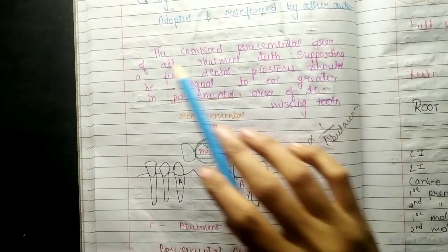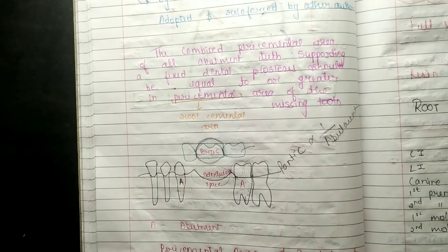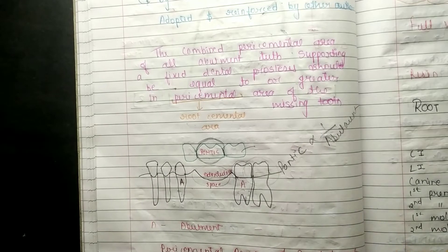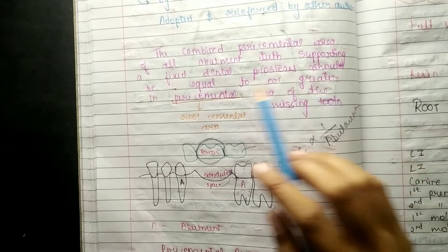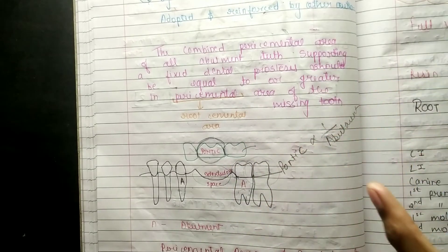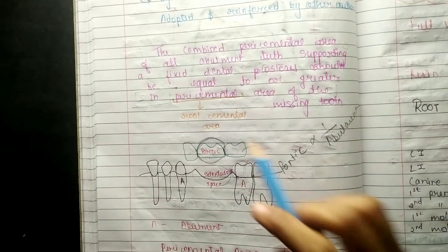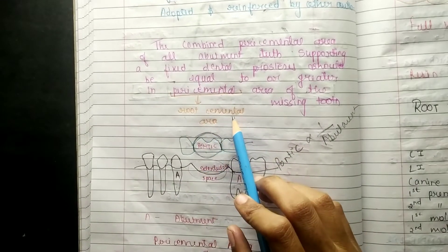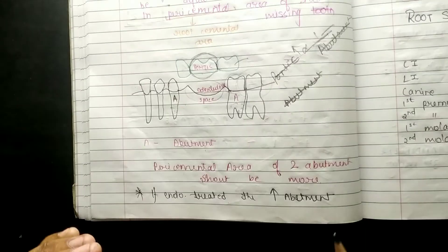The combined pericemental area of all abutment teeth supporting a fixed dental prosthesis, that is FPD, should be equal to or greater in pericemental area of the missing tooth. That is pericemental area, that means root cemental area.